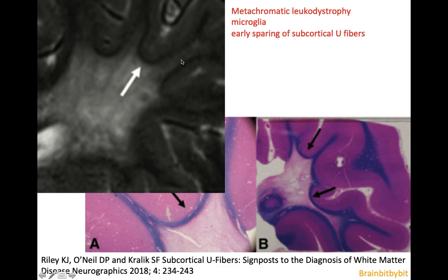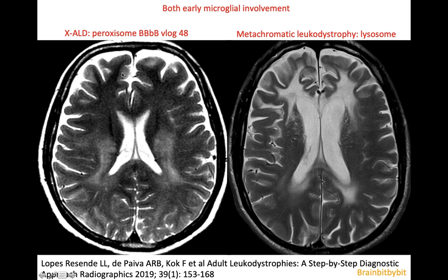There is early sparing of the subcortical U-fibers in metachromatic leukodystrophy, and that is because the microglial cells are affected early. In the white matter, there are different cells, and each cell has a different task. The myelin and the lipid have to be turned over and recycled continuously, and this has been assigned to the microglial cells. Because the subcortical U-fibers have a low myelin turnover rate, they are spared early in the disease. We also saw that in X-linked adrenoleukodystrophy, which also had early microglial involvement.